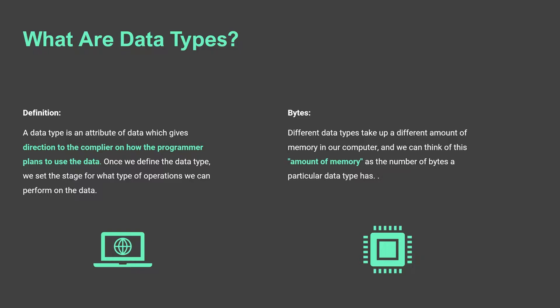Something else we have to talk about when discussing data types is bytes. Different data types take up different amounts of memory in our computer, and we can think of this amount of memory as the number of bytes a particular data type has. This has an implication for the overall speed of our program — different data types take up different amounts of memory and that can have an implication in our program.